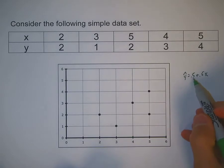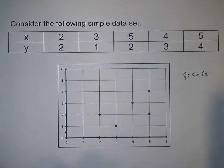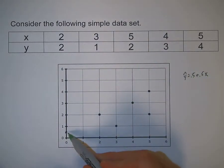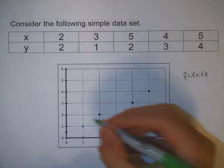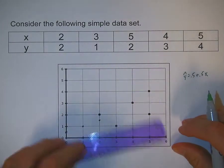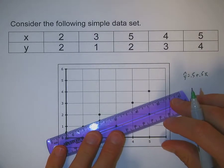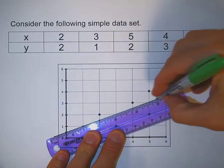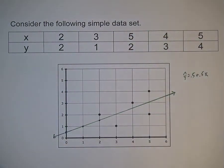It has a y-intercept of 0.5 and a slope of 0.5. So the y-intercept is here. With a slope of 0.5, for every one unit we go over, we go a half unit up. So there's a point here. Then over one, up a half, another point here. I only need two points to make a line, but I can use all three. So this would be the first possible best fit line.